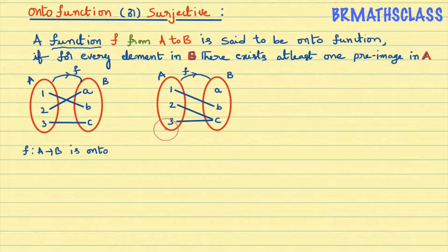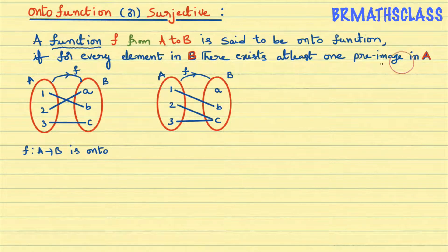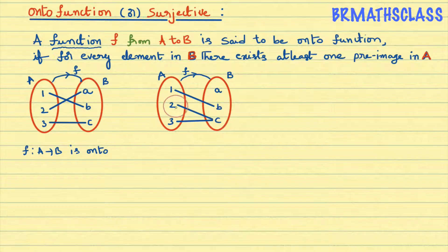Every element in set A is used and it is used only once — 1 used once, 2 used once, 3 used once. So it is a function. Now we need to check if this function is onto. For every element in set B, there must exist at least one preimage in set A. For element b, preimage is there. For element c, preimages are 2 and 3 — two preimages, which is okay since at least one is required.